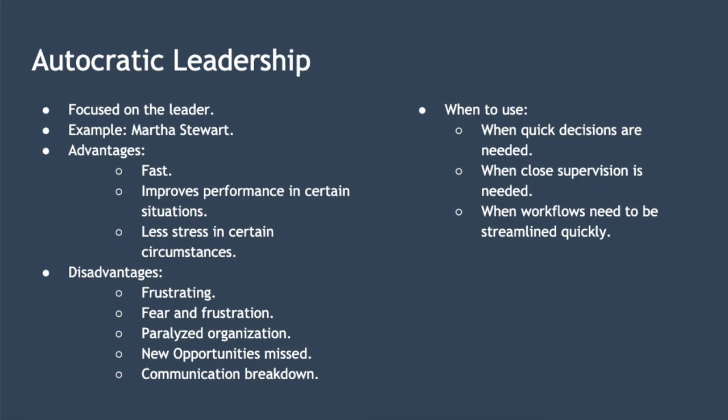An example of an autocratic leader is Martha Stewart. There are some advantages to autocratic leadership. Firstly, decision-making is fast — with no consultation required, the leader can make very quick decisions. It can improve performance in certain situations, as managers are motivated to perform because they feel the leader is watching them. And it can be less stressful for subordinates, as the leader shoulders all the responsibility for outcomes and decision-making.